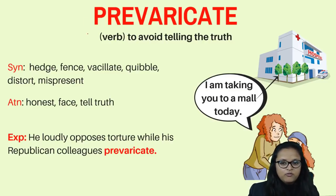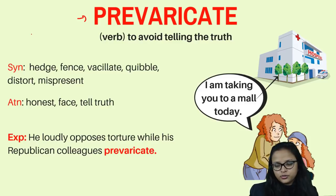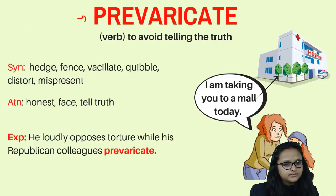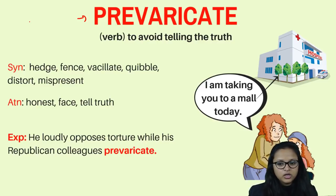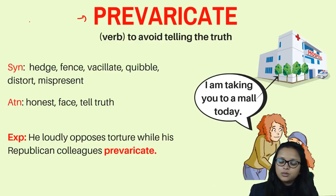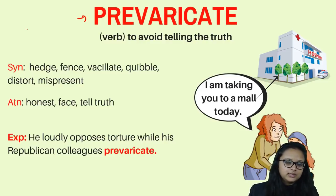The next word is prevaricate, which means trying to hide the truth. For example, your child doesn't like going to the hospital for an injection, so you tell him you're going for a picnic, ask him to wait in the car, but actually take him to the hospital for vaccination. Instead of telling the truth, you told him you were going to a mall or a picnic — that is prevarication. Similarly, politicians sometimes hide the actual number of deaths in accidents.